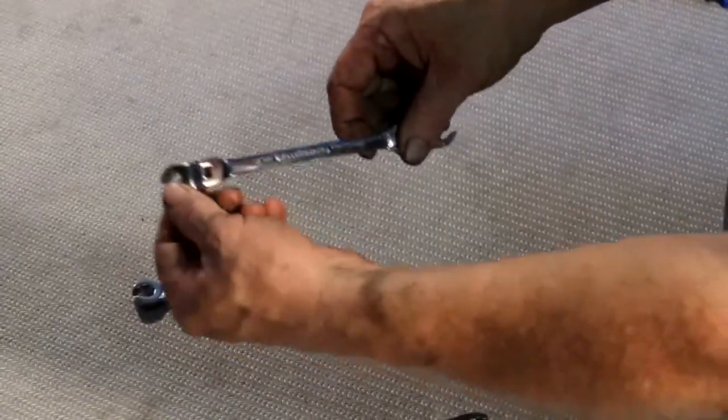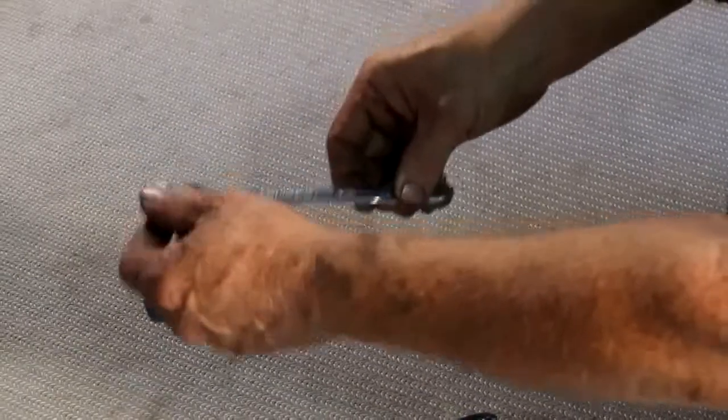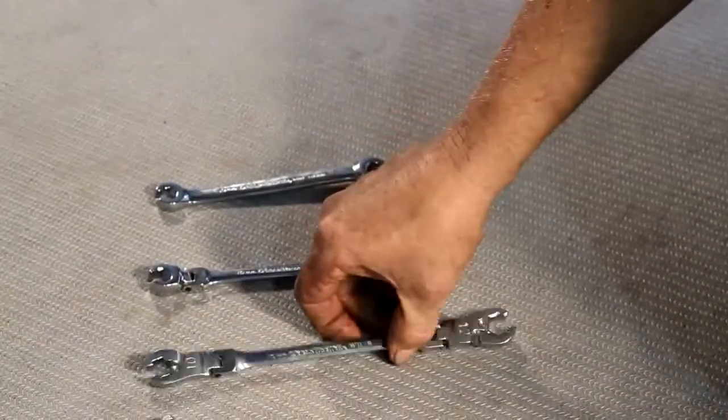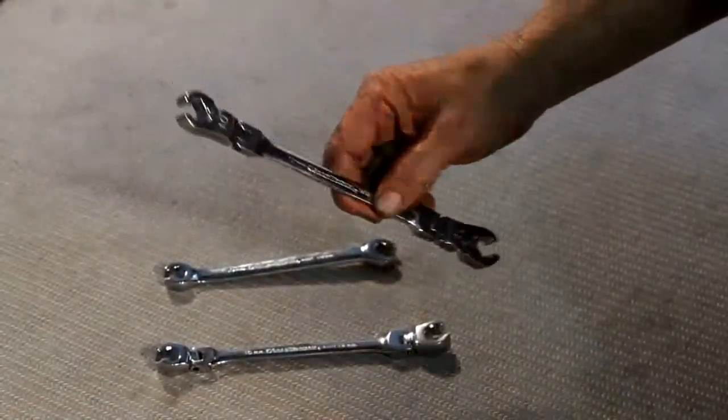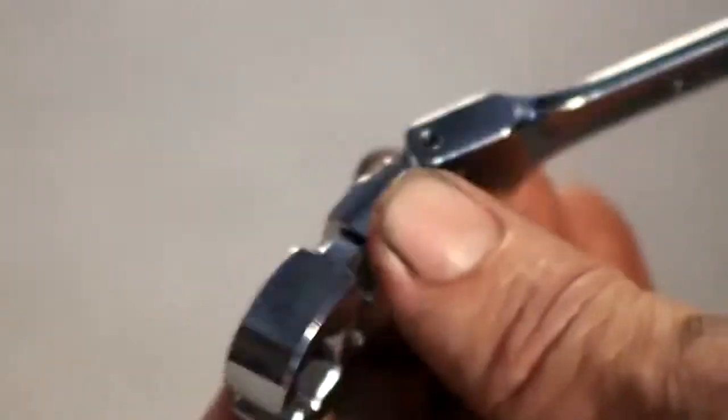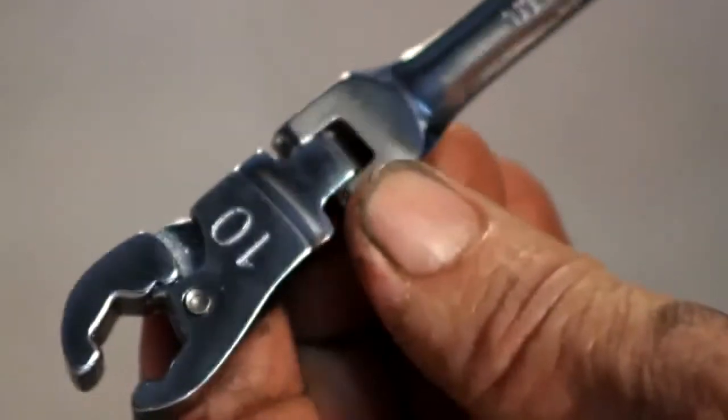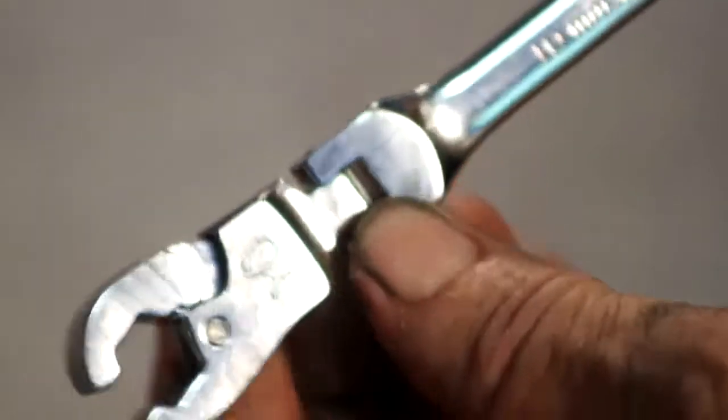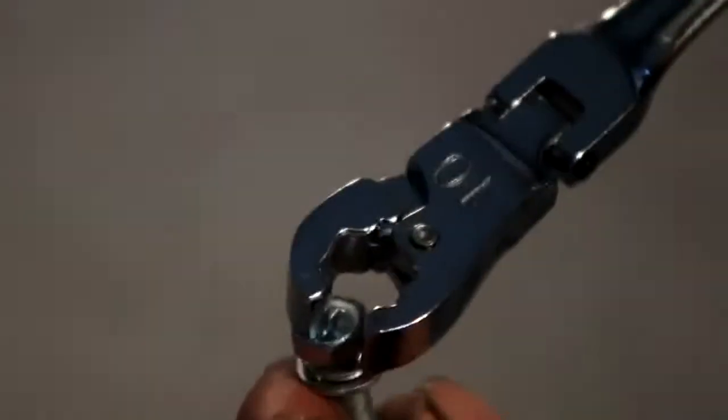Now GearWrench introduces the ratcheting flex flare nut wrench. This new wrench offers the feature of the flex head, but also includes a ratcheting jaw, which means you don't have to remove the wrench to reposition it on the fastener, increasing your speed, productivity, and saving you time.